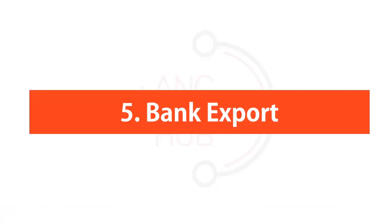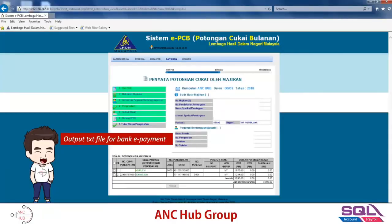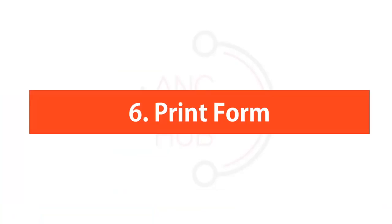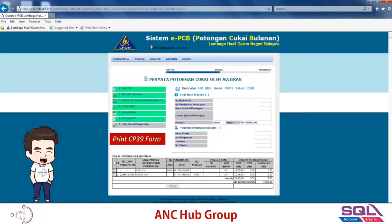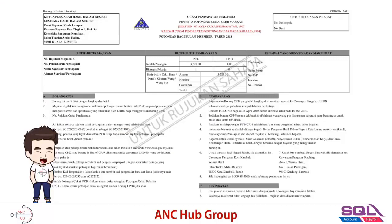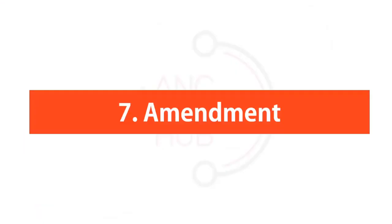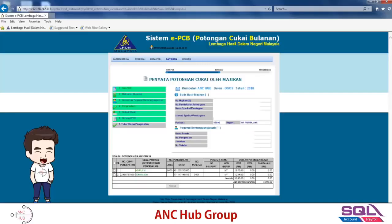Number five and number six are extra features that once you get used to the portal, you don't actually need. Number five is export of bank TXT — it saves a tax file for you to pay through the bank. Number six is for printing a form for your record purposes — click it and it will generate the form. Number seven is for amendment purposes. If you have submitted but haven't made payment and you realize you made a mistake, you can go to number seven, change the status, resubmit, and make a payment.